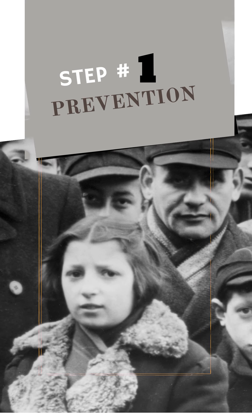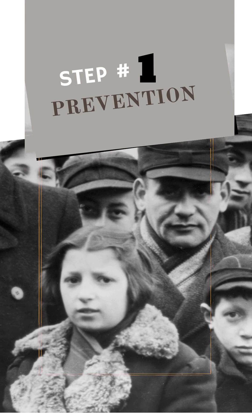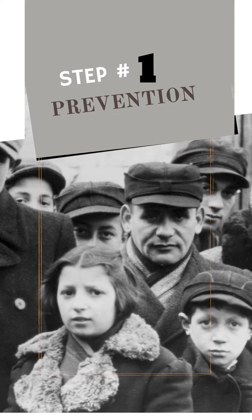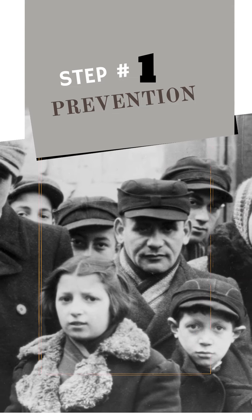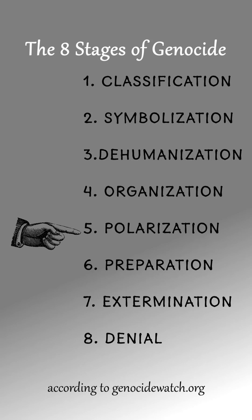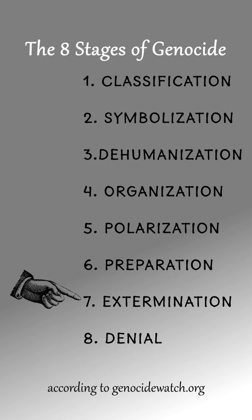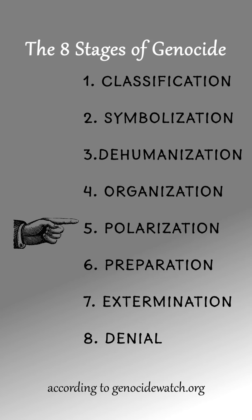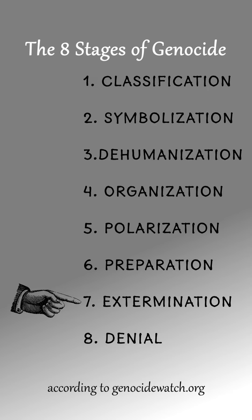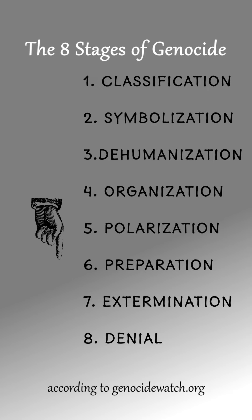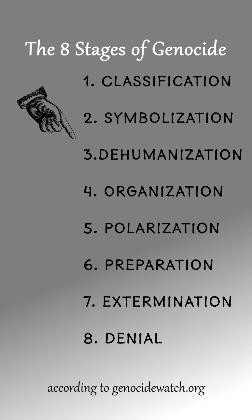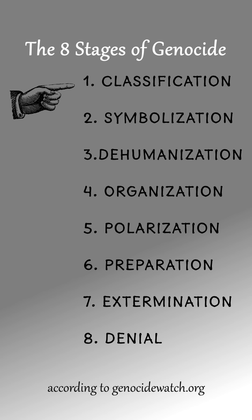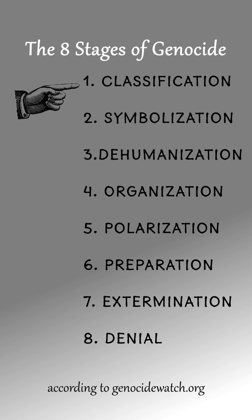The first step is taking preventative measures before the mass atrocities occur. Historically, most cases of genocide are foreshadowed by several signs, the most obvious being the political separation of citizens according to race, religion, ethnicity, and other social groupings.